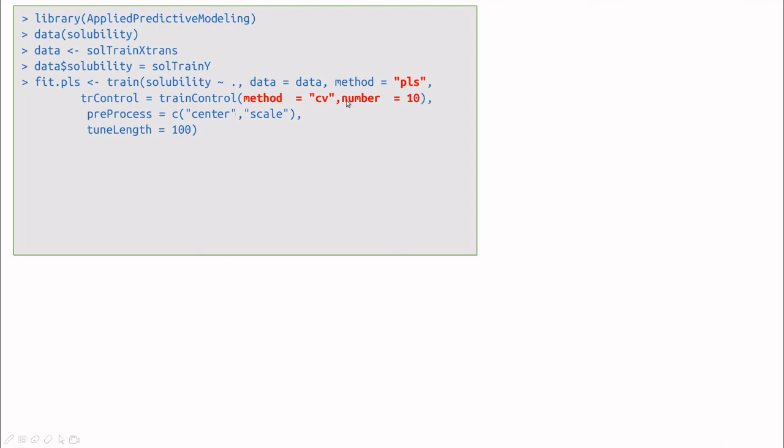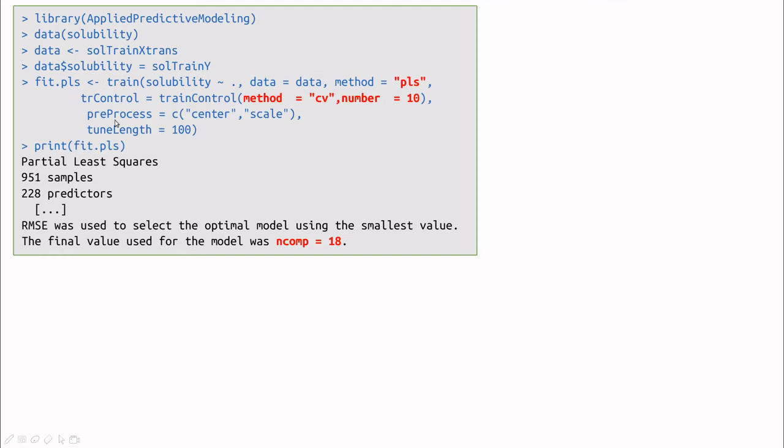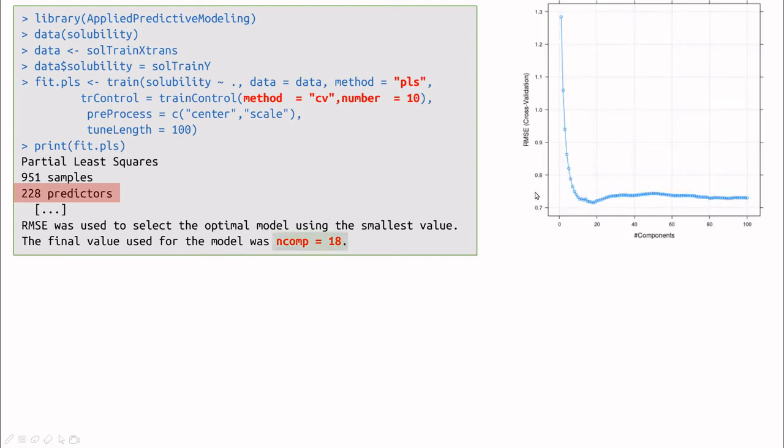Let me show you an example. Here we have some data. I'm going to use cross-validation and the method PLS within this train function in the caret library. You can see that this dataset, which you can download from the description, has 228 predictors, which is a lot. But cross-validation tells us that using PLS the optimal solution has just 18. If you plot the output of the cross-validation training, you can see that the root mean square error is minimized around 18 components. We've reduced from 228 to 18 components.